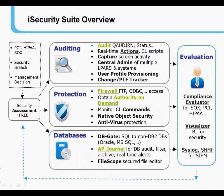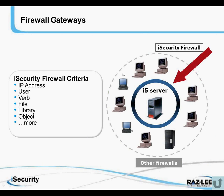We'll skip our Action solution for now and go on to our Firewall solution. Our firewall is not an external firewall as are other products on the market. Rather, the iSecurity firewall protects the AS400 from access from the network — from PCs, from laptops — whether from the office, from home, or from the road. Firewall criteria include IP address, the user who initiated the request, the verb used to access the data, the file access, the library, the object, and more.